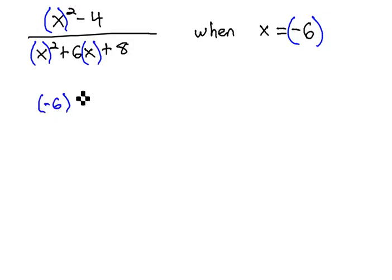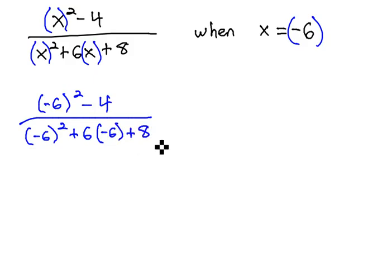This gives us negative 6 squared minus 4 over negative 6 squared plus 6 times negative 6 plus 8, and this gives us an order of operations problem that we're allowed to evaluate.